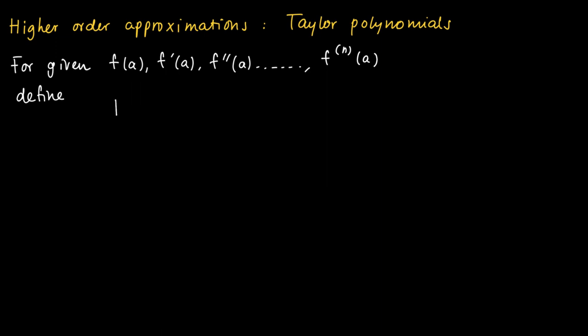Suppose we know f(a), f'(a), f''(a) until the nth derivative in a. Then we may define a Taylor polynomial, which is the order n approximation of a function. This is f(a) plus f'(a) times (x-a), which is the linear approximation. Then we get the quadratic, and for any higher order approximation we add one term.